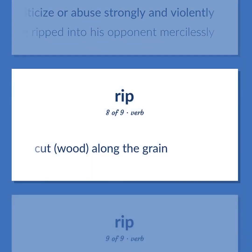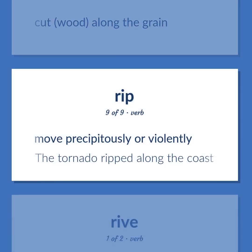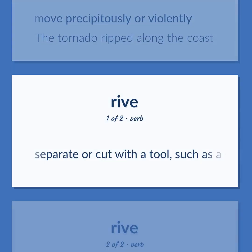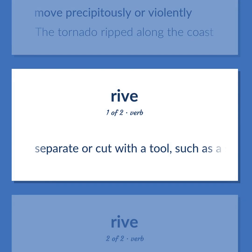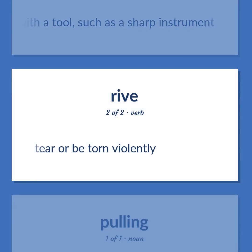Rip: to cut along the grain. Also, to move precipitously or violently — 'The tornado ripped along the coast.' Also, to separate or cut with a tool such as a sharp instrument. Also, to tear or be torn violently.